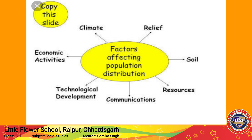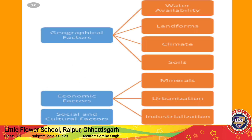तो social factors भी population distribution को affect करते हैं। जहाँ proper चीज़ें available हैं वहाँ population जाता रहेगा, और जहाँ problem है वहाँ population कम रहेगा। Geographical factors में proper water facility, land, soil, और climate शामिल हैं। Second is the economic factor — minerals, urbanization, and industrialization — मतलब जिससे लोग अपनी ज़िंदगी चला सकें। ये सारे factors population distribution को effect करते हैं।